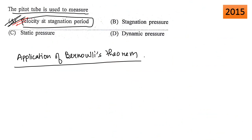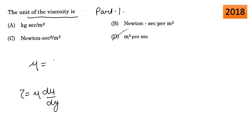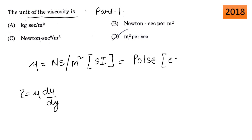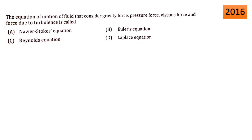Pitot tube is used to measure the velocity at the stagnation point — option A is correct. The unit of viscosity was already discussed in part 1. From Newton's law of viscosity, tau equals mu times du/dy. The SI unit of viscosity is Newton-second per meter square. In CGS, the unit is poise, which is dyne-second per centimeter square. Option B is the correct option.